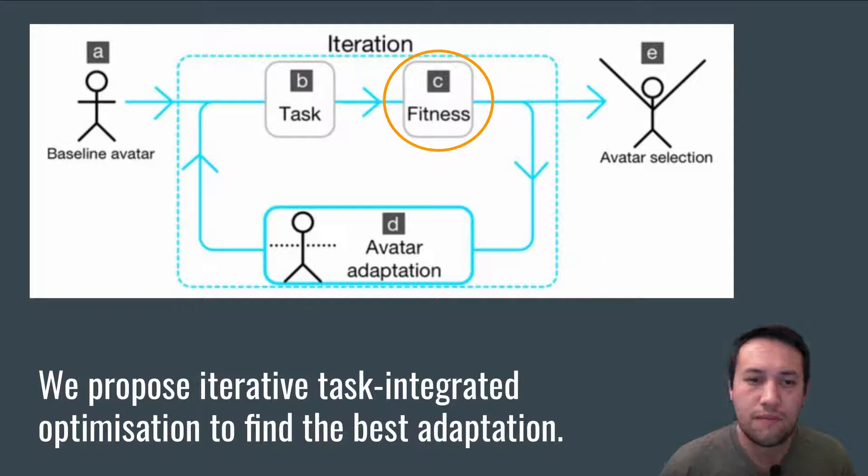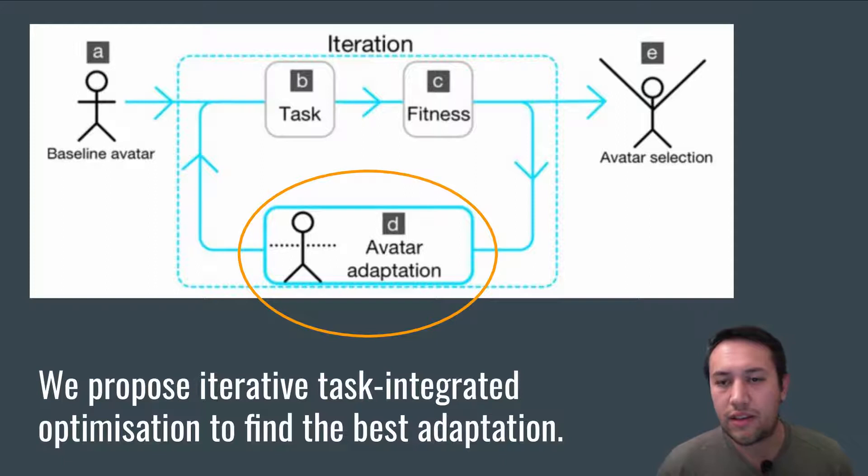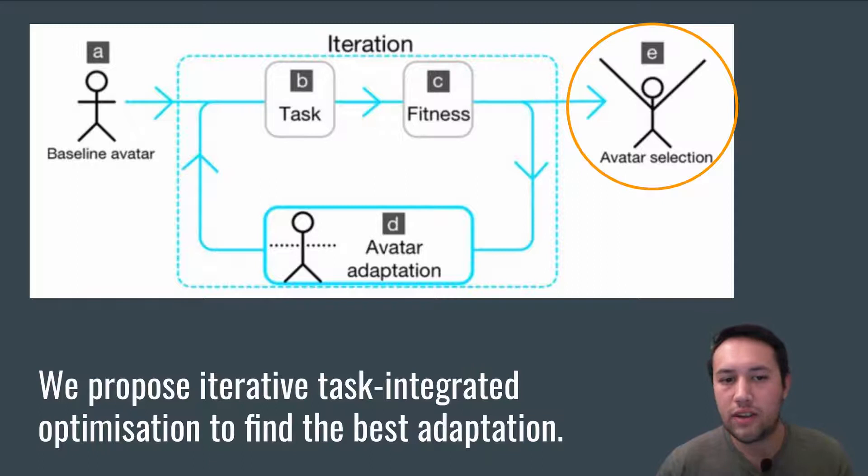We feed this fitness data into an optimization algorithm, which then adapts the avatar, which the user then tests again in the same task. This cycle of adaptation and task assessment continues until we reach a finishing criteria and an avatar is selected.